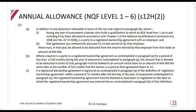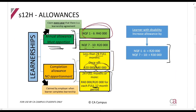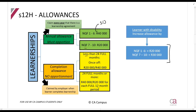Now let me quickly show you where we find this in the Act. In addition to any deductions allowed in terms of the Act, during a year of assessment, a learner who holds a qualification at NQF level 1 up to NQF level 6, is in a registered learnership agreement, and the learnership is part of the employer's trade — they must be allowed to deduct from that trade an amount of R40,000. This is the annual allowance — section 12H(2).